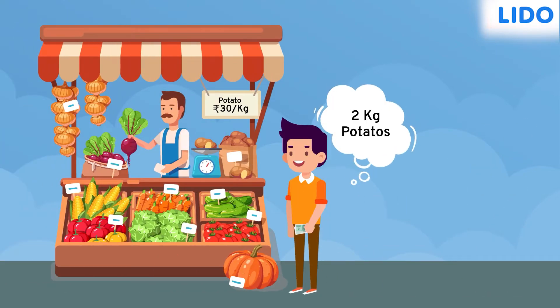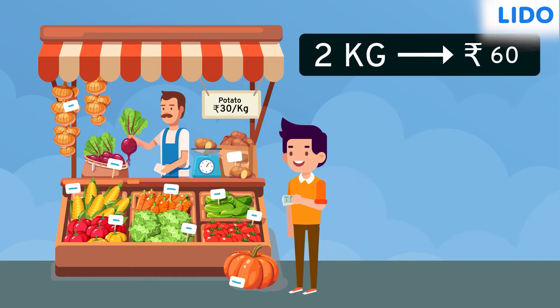Ian needs to buy 2 kg of potatoes and potatoes cost 30 rupees per kg. This means 2 kg will cost Ian 60 rupees, but he has only 50. Can he buy 2 kg potatoes or can he buy only 1 kg?